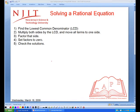To solve a rational equation we must find the lowest common denominator. Then we must multiply both sides by the lowest common denominator and move all terms to one side. Then factor that side, set all factors to zero, and then check the solution.